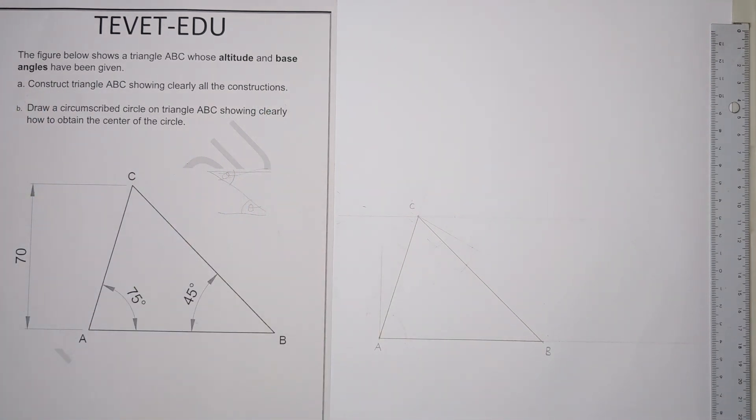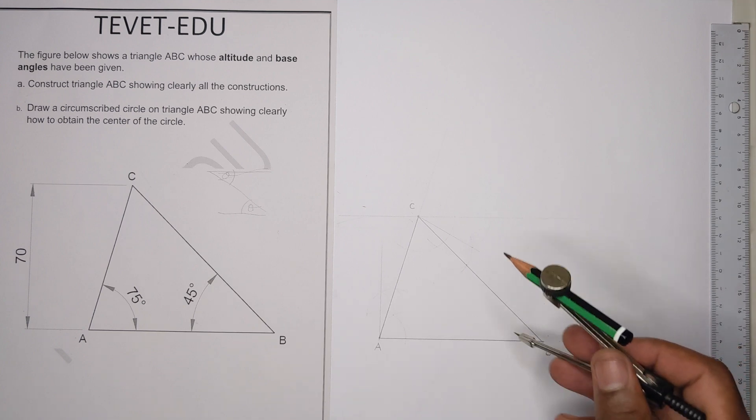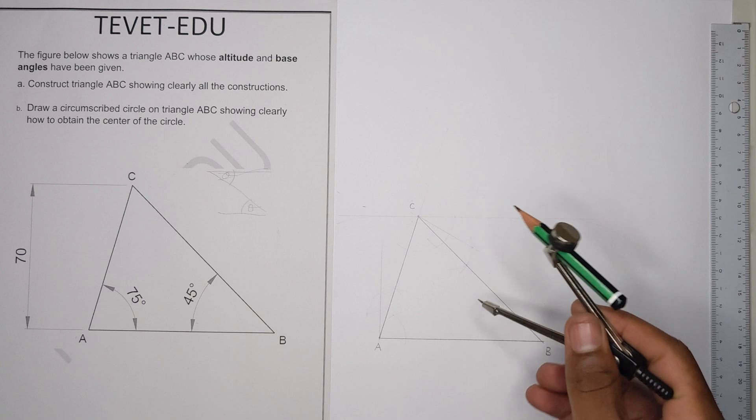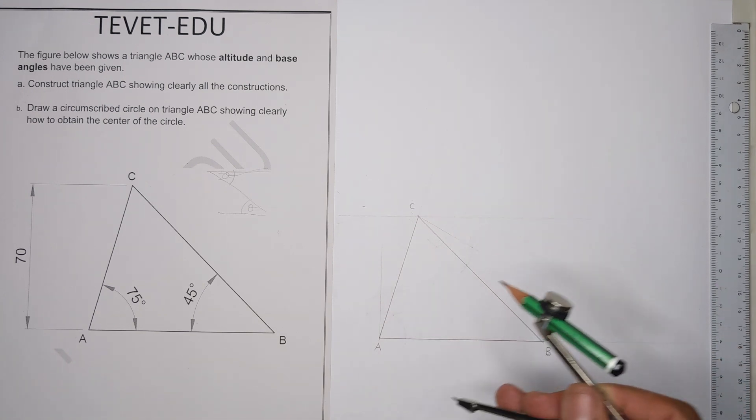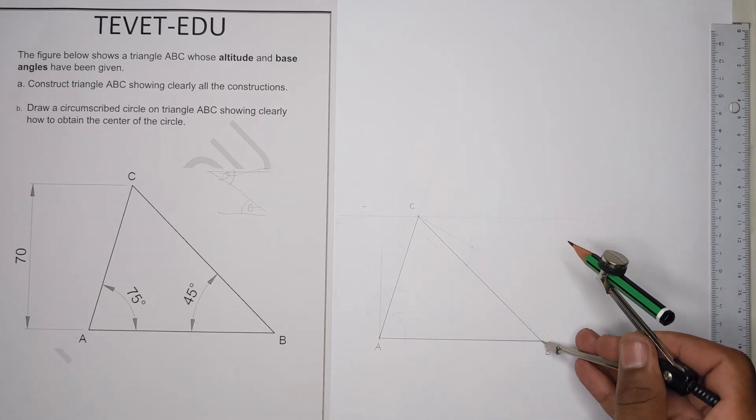The next one is for us to draw a circle outside this triangle. For us to draw a circumscribed circle, we have to find what is known as a circumcenter.